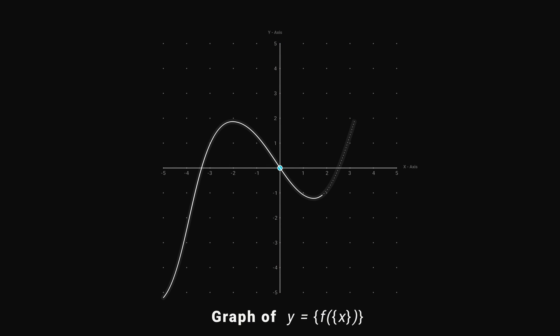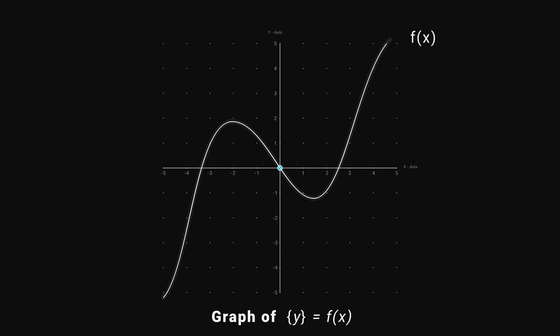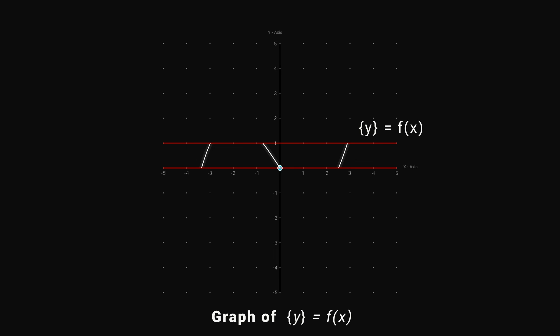To draw such a function, follow two steps. First, draw f(x), then draw two lines: y = 0 and y = 1. Only the graph between y = 0 and y = 1 is the final graph; neglect the remaining portion.